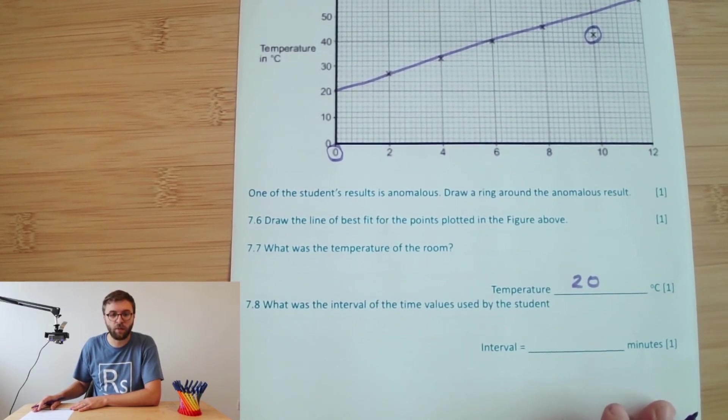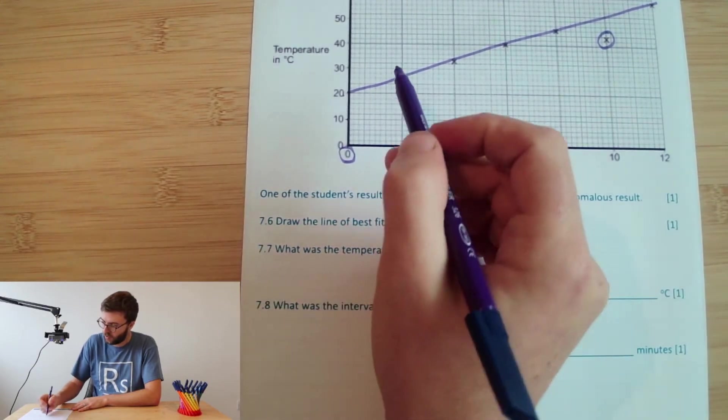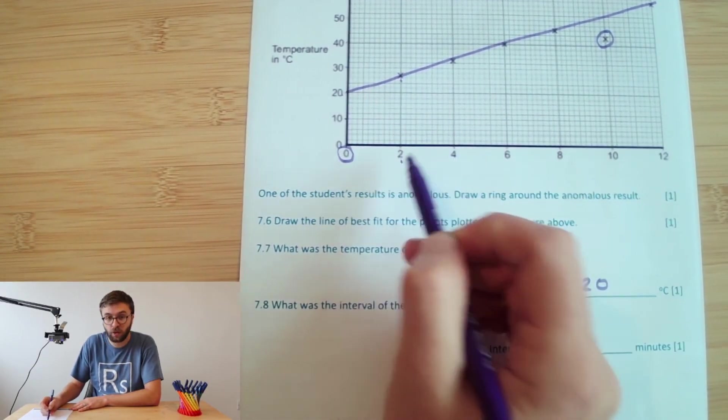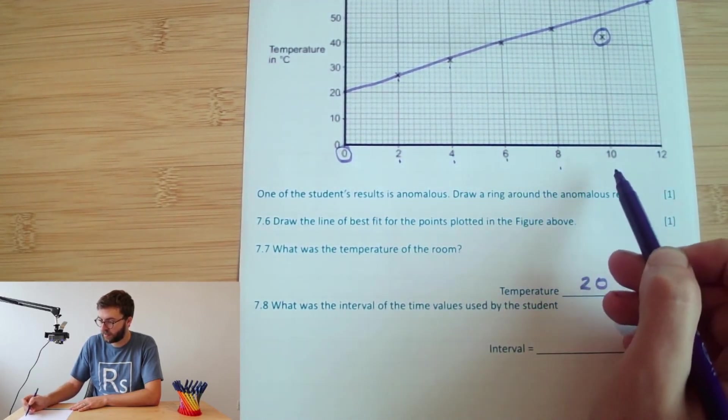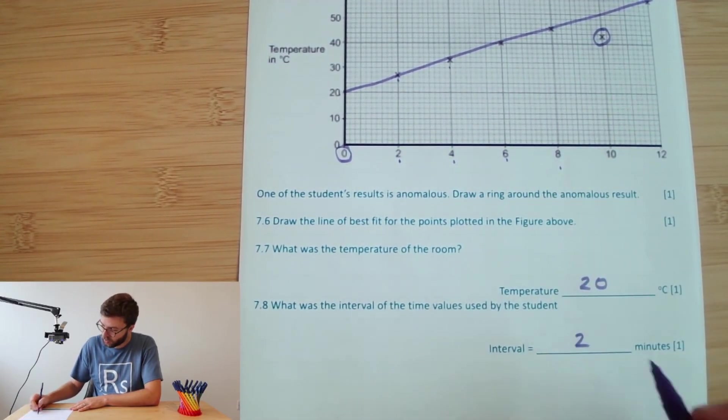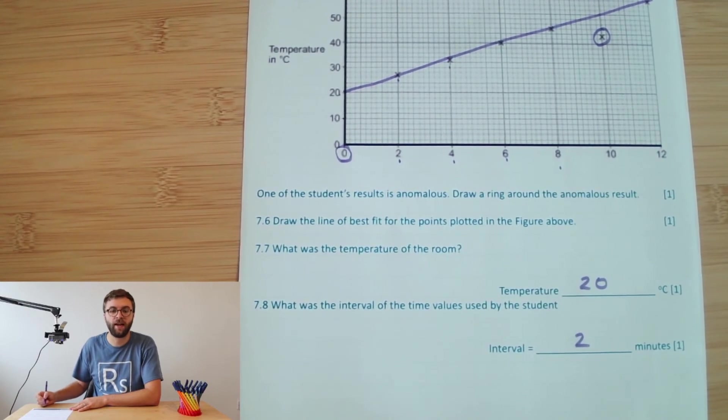And finally, what was the interval of the time values used by the student? Well, we can clearly see that this one here is at 2. This point is at 4. This point is at 6, 8, 10, 12, etc. So it means they're recording the temperature every two minutes.